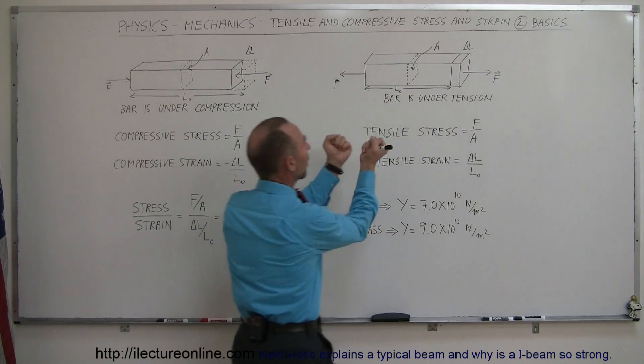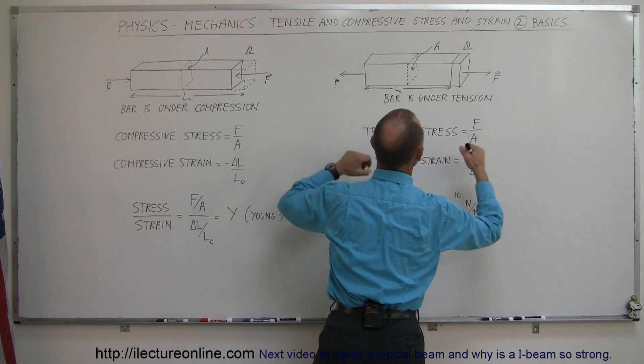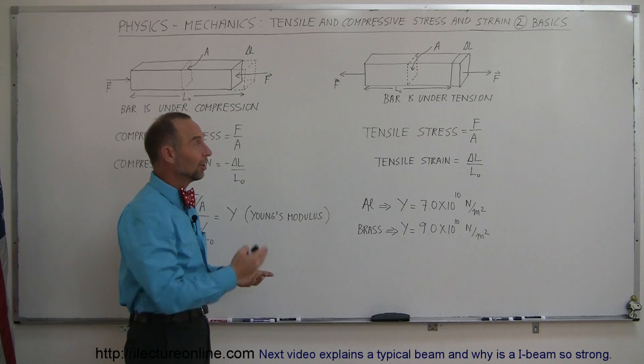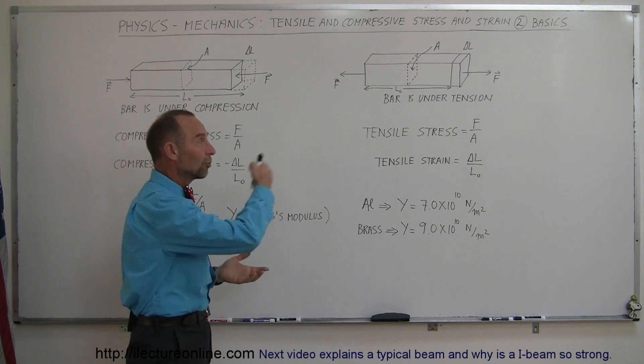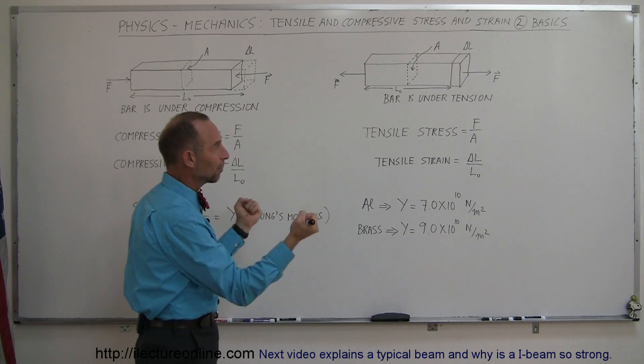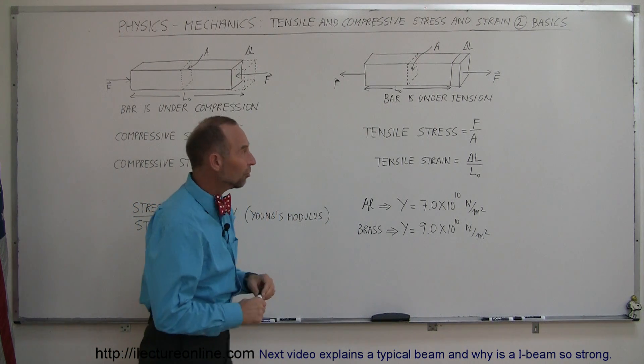In this case, we're pulling on the bar from both ends, pulling apart from each other. Those forces have to be equal by Newton's third law, because if one was bigger than the other, the bar would accelerate in one direction. For the bar to stay stationary, you've got to pull both directions with the same amount of force.